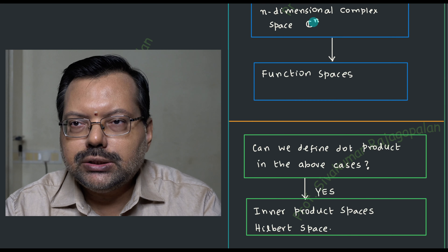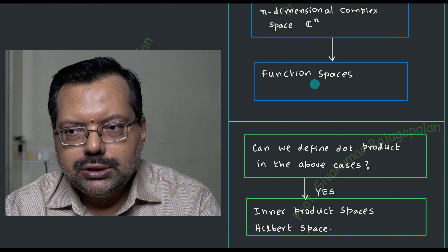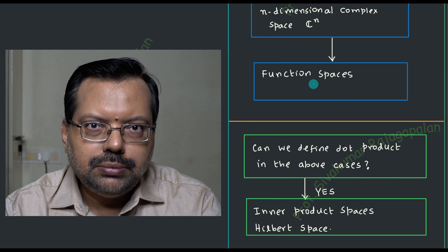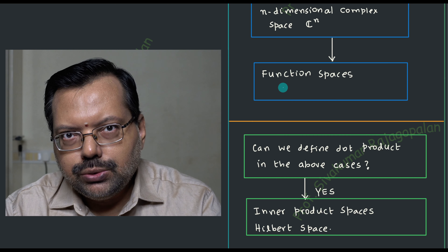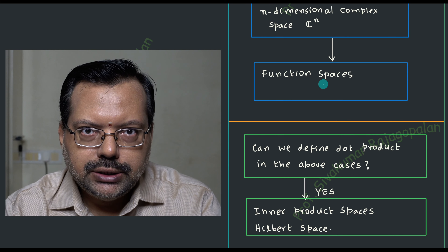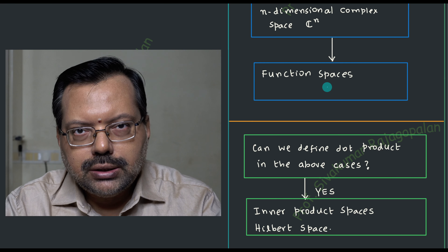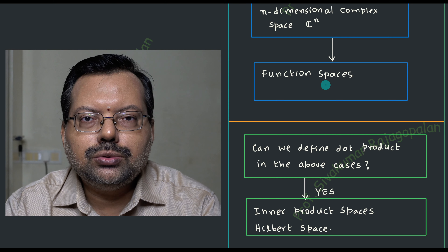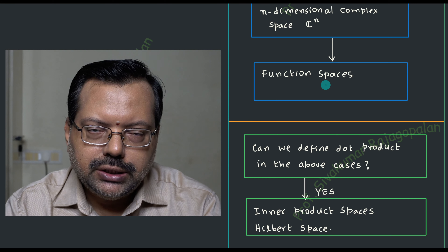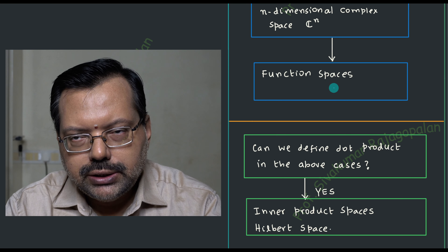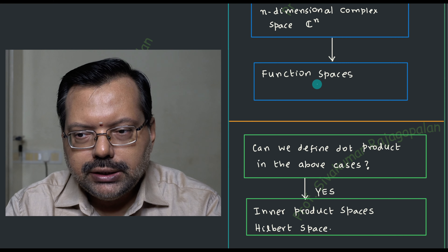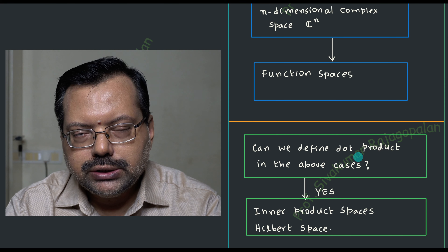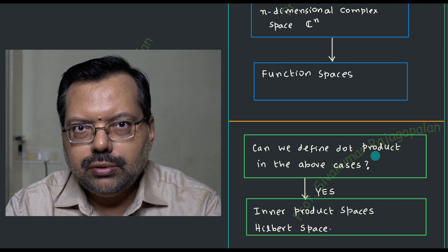Once you understand the complex vector space, we are ready to discuss function spaces. The simple vectors that look like 2i + 3j — those numbers 2 and 3 will be replaced by some functions, something like sine x, e to the power x, whatever it is. If you substitute functions there rather than having numerical elements, they are known as function spaces. For function spaces we will have to rewrite the appropriate properties since these are continuous variables. We will discuss function spaces in the next class.